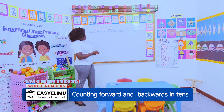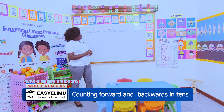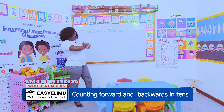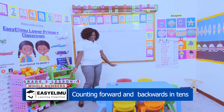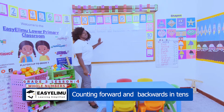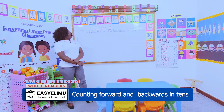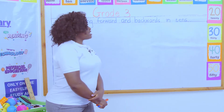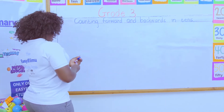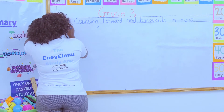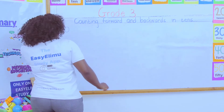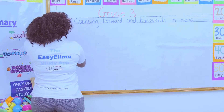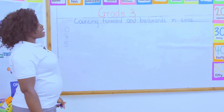Today we are counting forward and backwards in tens. Remind me the rules — this is revision, not new teaching. I haven't started Grade 3 work yet. The rule for counting backward and forward in tens: the last digit is the same in all the numbers. If it ends with a zero, all numbers end with zero; if it ends with a four, all numbers end with four.